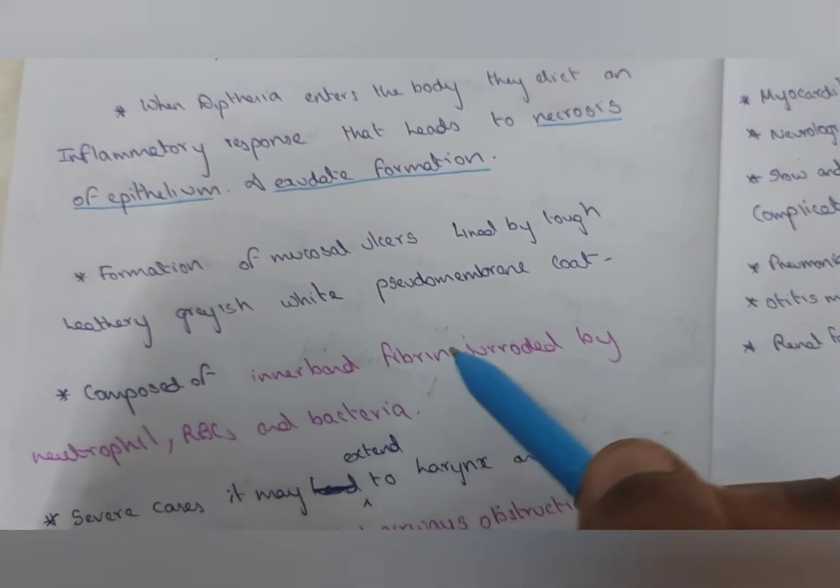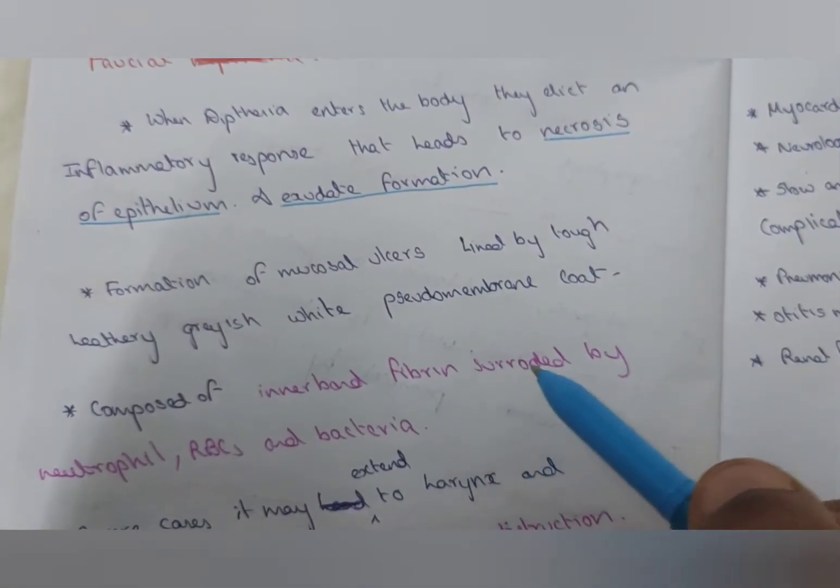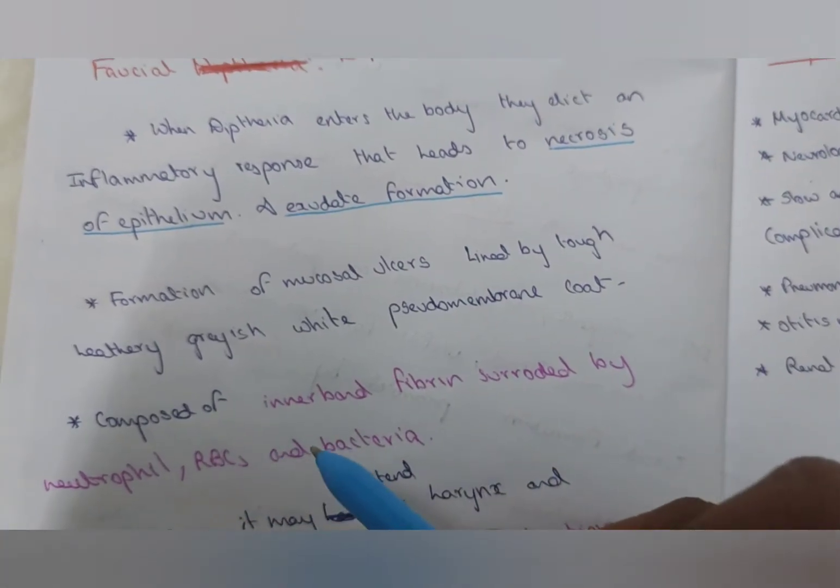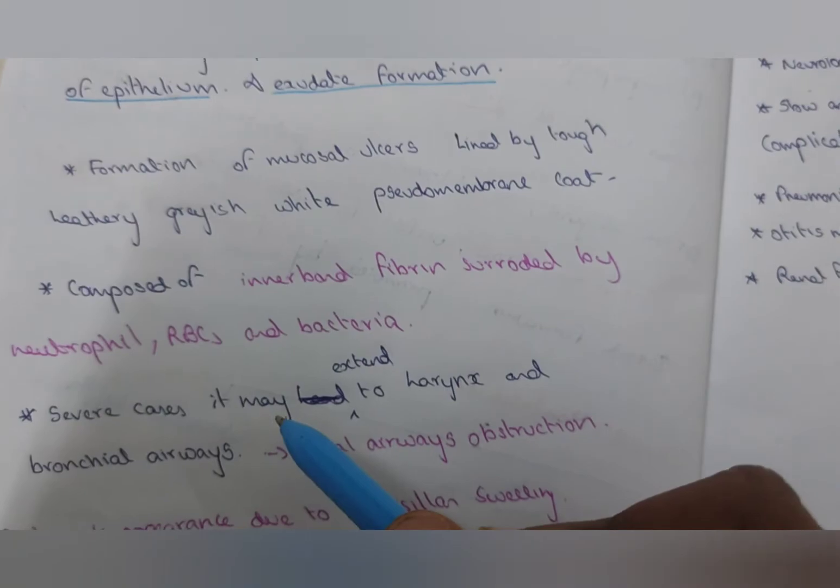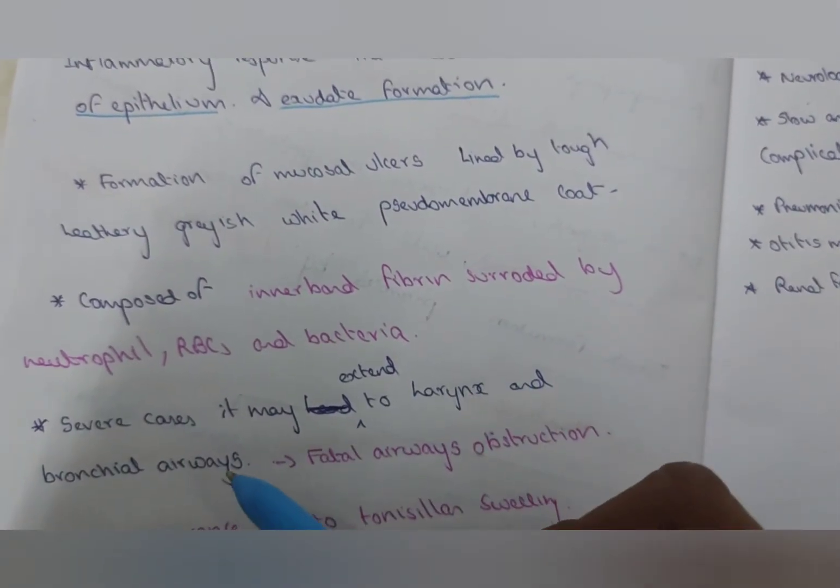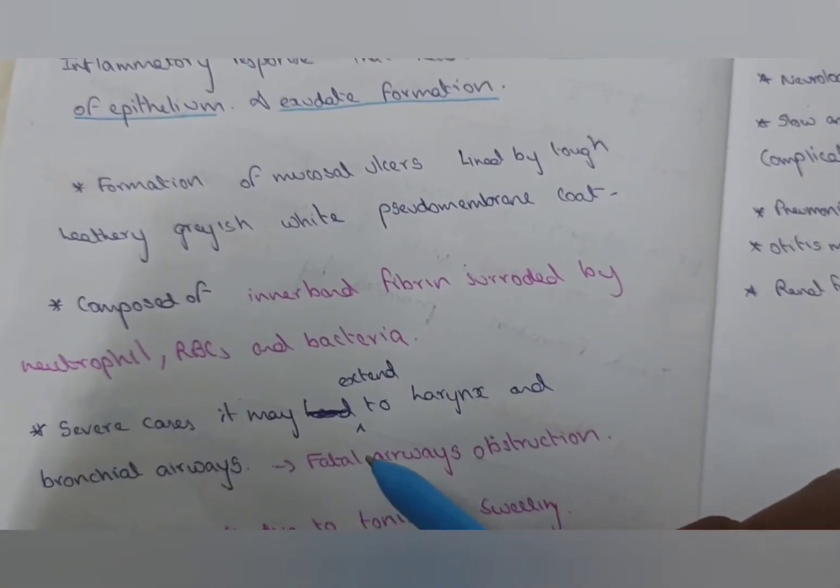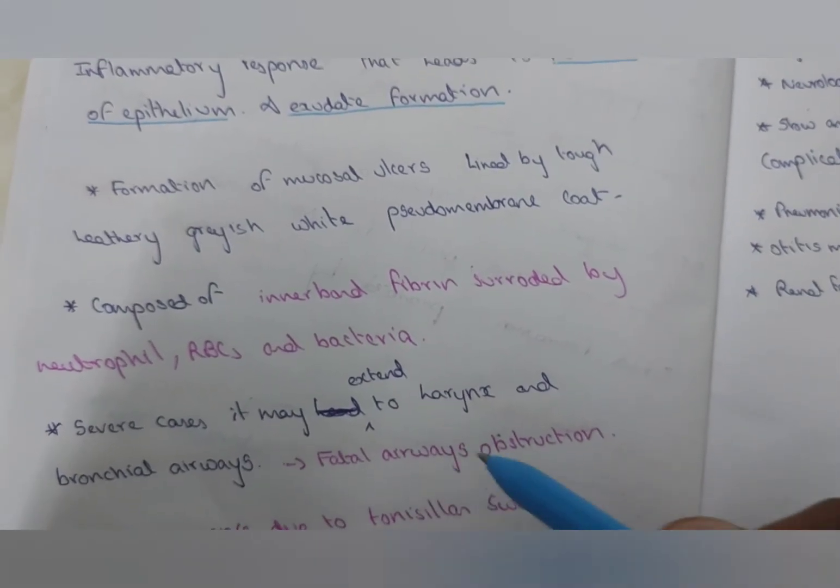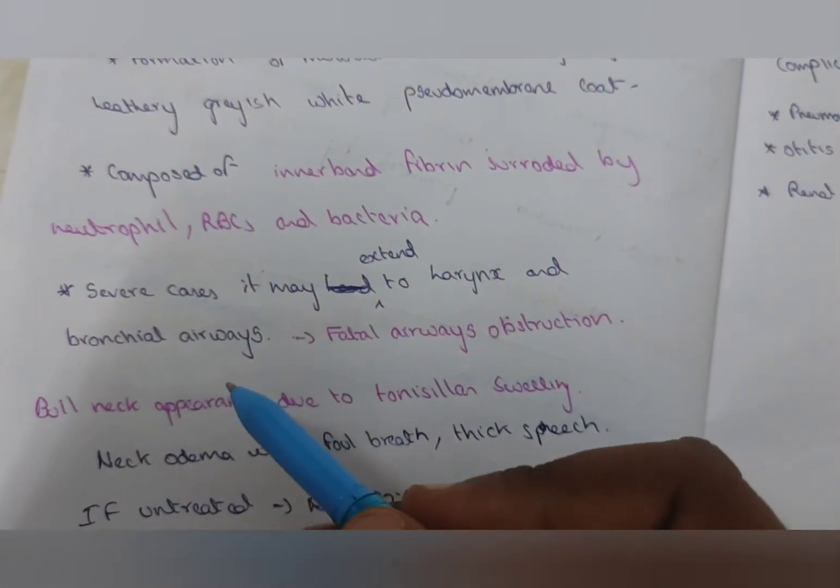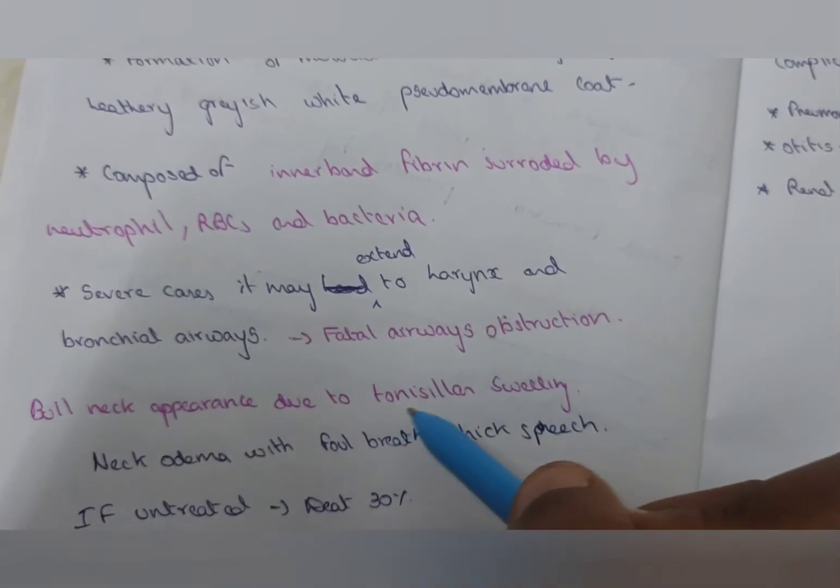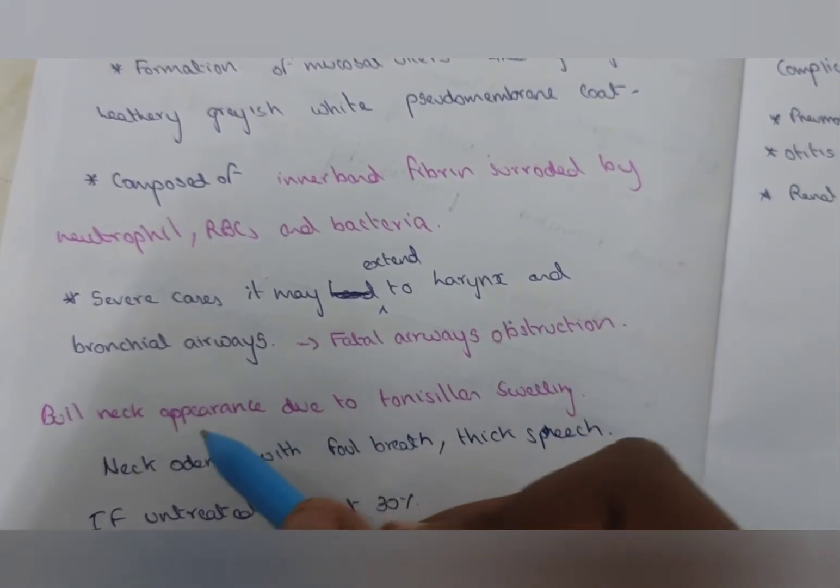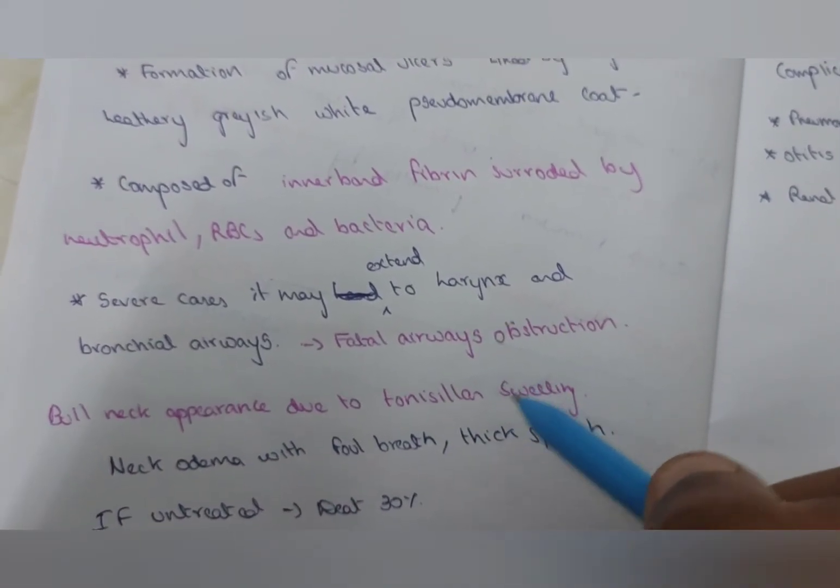Pseudomembrane coat is composed of fibrin surrounded by neutrophils, RBC and bacteria. In severe cases, it may extend to larynx and bronchial tree, which causes obstruction and leads to fatal outcomes. The bull neck appearance is due to tonsillar swelling. It is the most important sign where the bull neck appearance is due to tonsillar swelling.